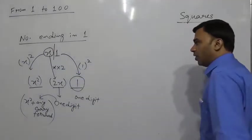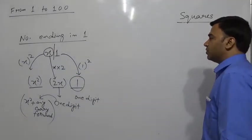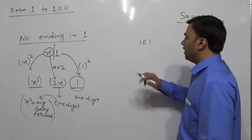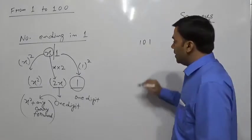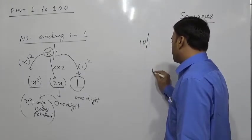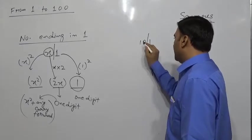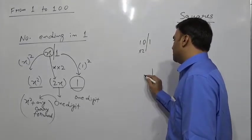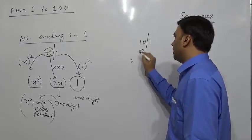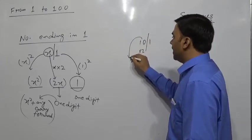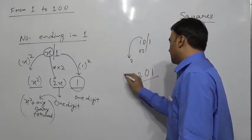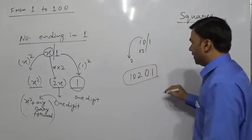Suppose we have 101. Separate 1: 10 × 2 = 20, so 0 comes in the middle and 2 carries forward; 10² = 100, plus 2 carry = 102. So the square of 101 is 10201.